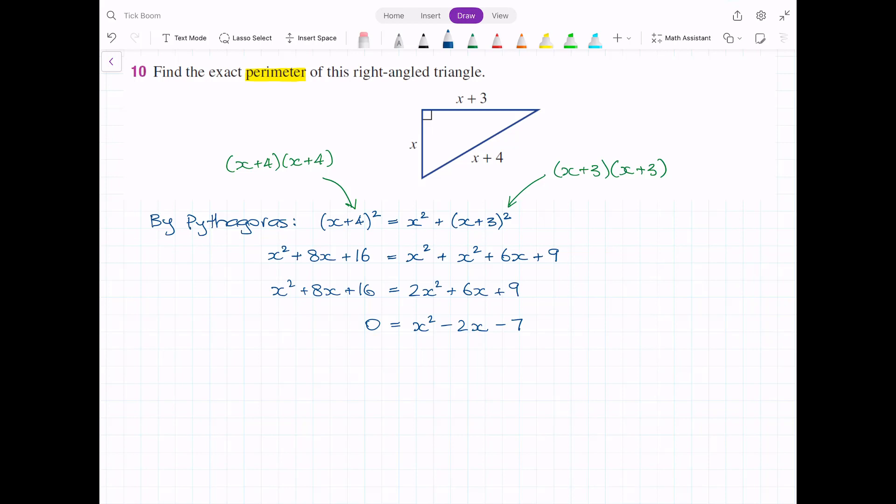Here we've got a quadratic and we want to solve for the values of x that make this quadratic 0. We can use the quadratic formula where we know that a being the coefficient of x² in this case is 1, b is equal to negative 2, and c is equal to negative 7. If I substitute those into the quadratic formula, I will be able to solve for x.